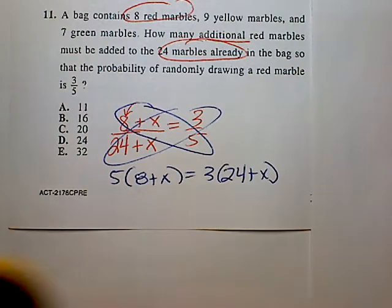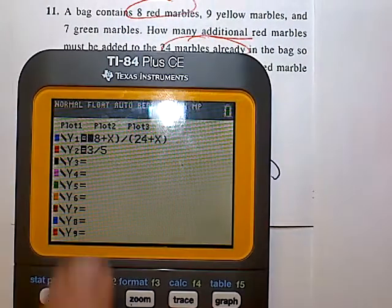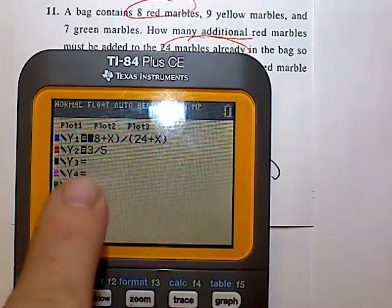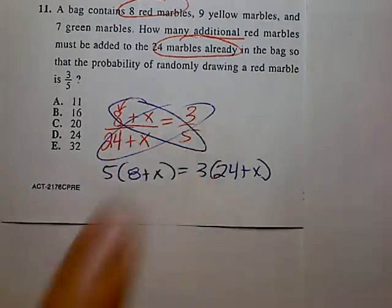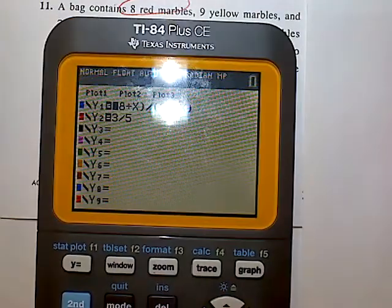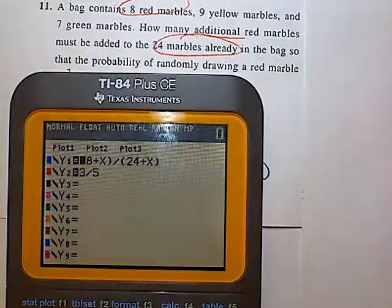So what I did is I went ahead and I plugged in the two equations. This is the top equation, and here's the bottom. I'm setting them equal. So here's the left side and the right side, and I want to know when are they equal. That represents the x value I'm trying to solve.